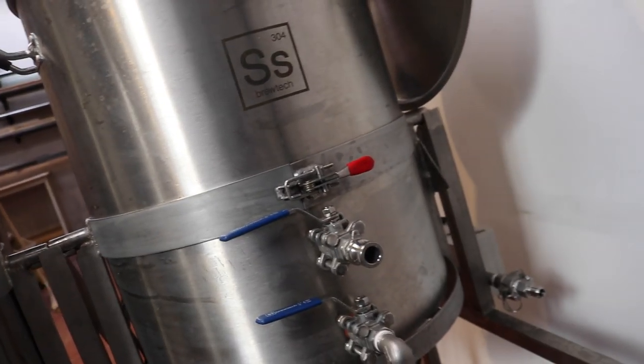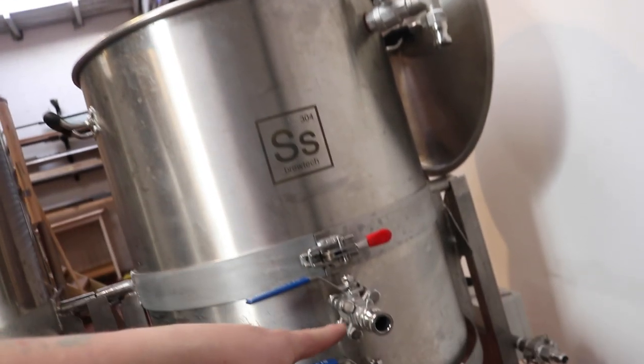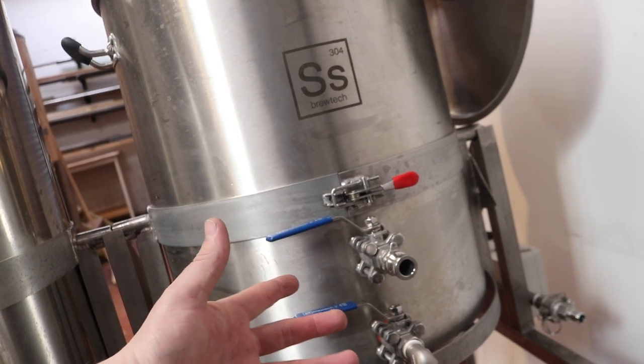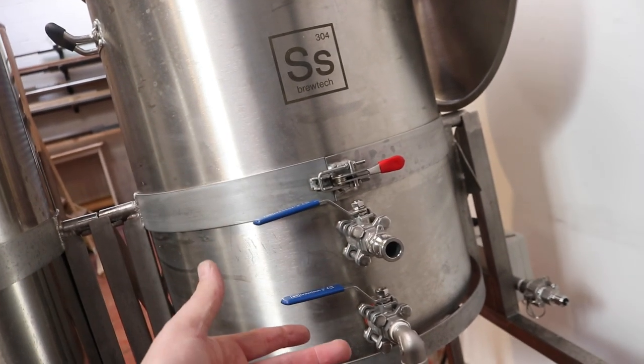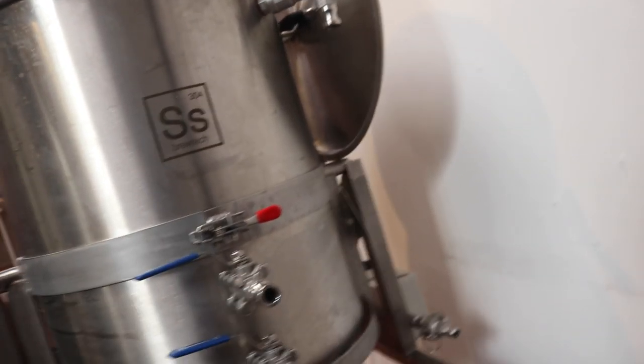I noticed during the brew day whilst I was still running off the mash tun into the boil kettle that was filling, I actually wanted to whirlpool as well so I got a consistent gravity reading and we didn't have any stratification of the wort in there. So having that extra port in the side allows me to do that.